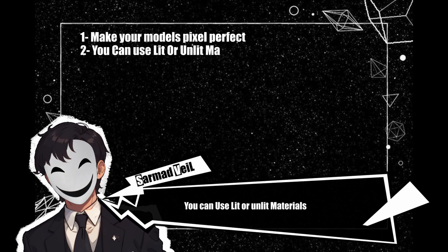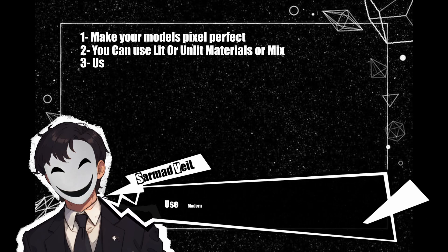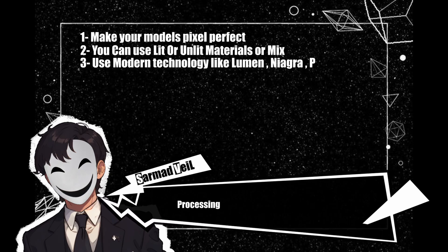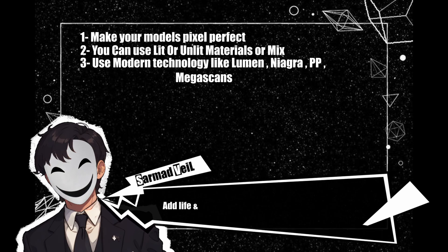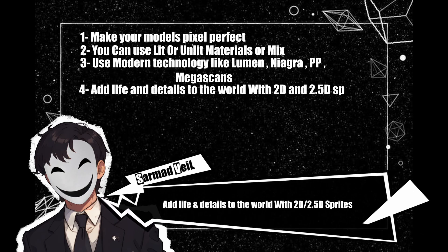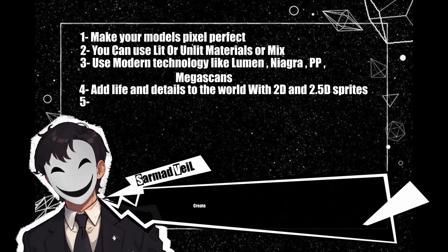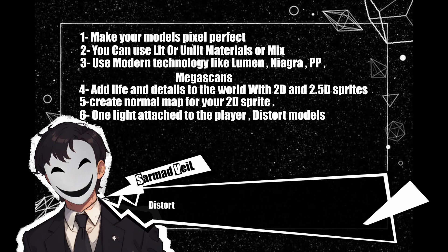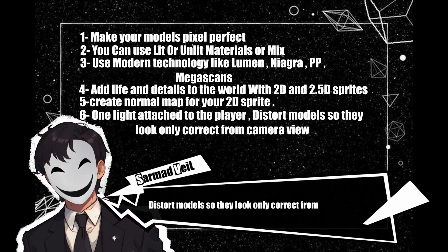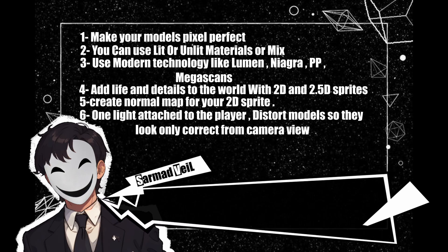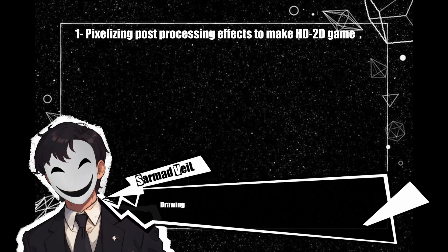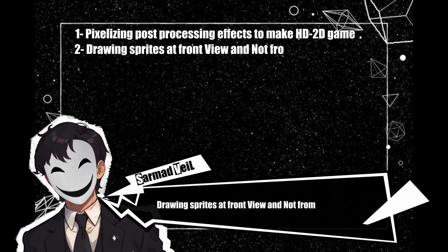Summary of what to do: make your models pixel perfect; use lit, unlit, or mixed materials; use modern technology like Lumen, Niagara, post-processing, foliage, and Megascans; add life with 2D and 2.5D sprites; create normal maps for 2D sprites; attach one light to the player; distort models so they look correct only from the camera view. What to avoid: pixelizing post-processing effects, drawing sprites in front view instead of from the camera perspective.